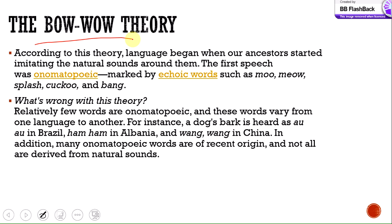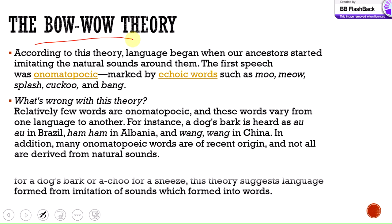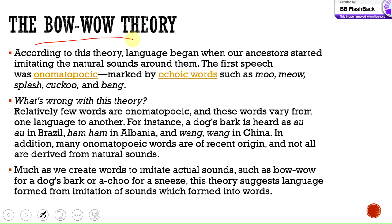What is wrong with the Bow-wow Theory? Relatively few words are onomatopoeic, and these words vary from language to language. For instance, a dog's bark is 'au-au' in Brazil, 'ham-ham' in Albania, and 'wang-wang' in China. Additionally, many onomatopoeic words are of recent origin and not all derived from natural sounds. So this theory is not applicable in all situations — if every language has different imitative sounds, how can it be universally verified?